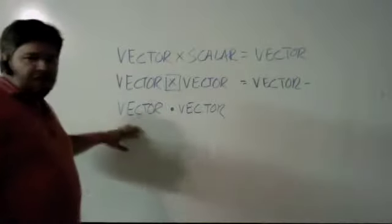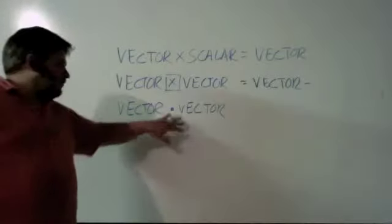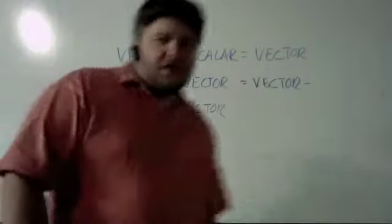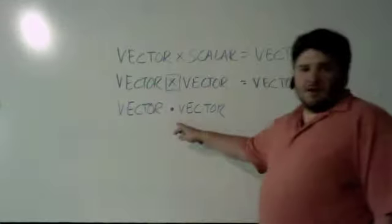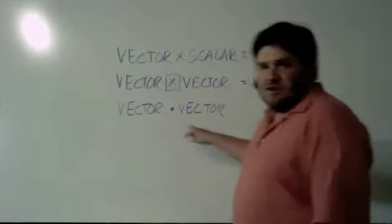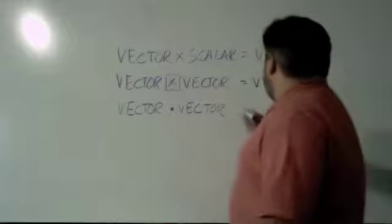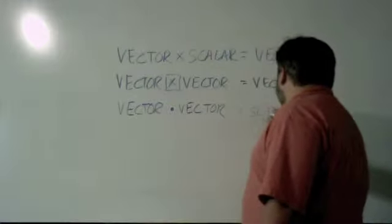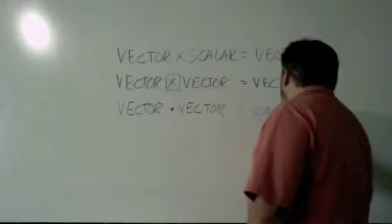The last one is a vector dot vector. So it's another product, another multiplication. We actually call this a dot product. A vector dotted with another vector ends up creating a scalar.